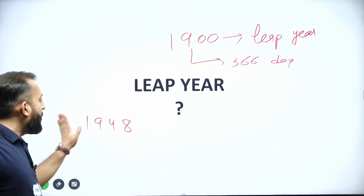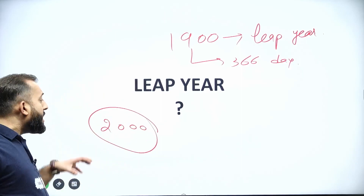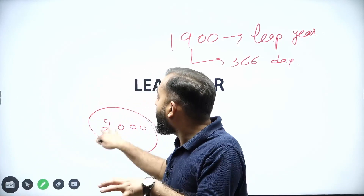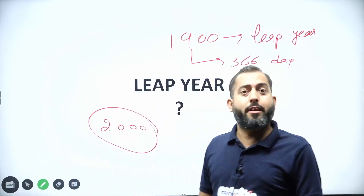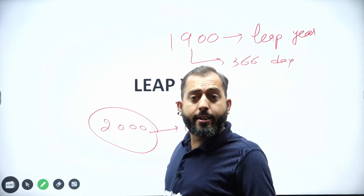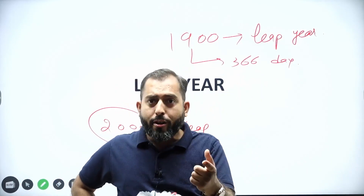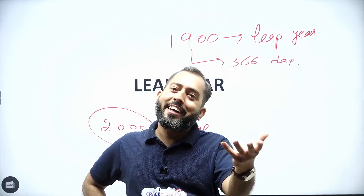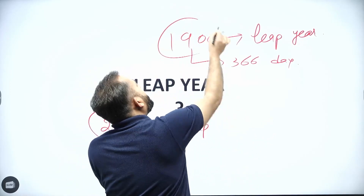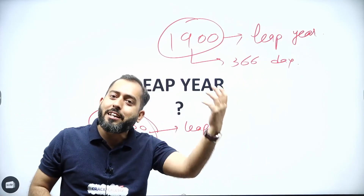Let's talk about the year 2000. If I ask you what kind of year it is, you will say it's a leap year. And the reason many of you will give is: if a year is divisible by 4, then that year is a leap year. So 1900 is divisible by 4, hence it's a leap year — and 2000 is also divisible by 4, hence it's a leap year.